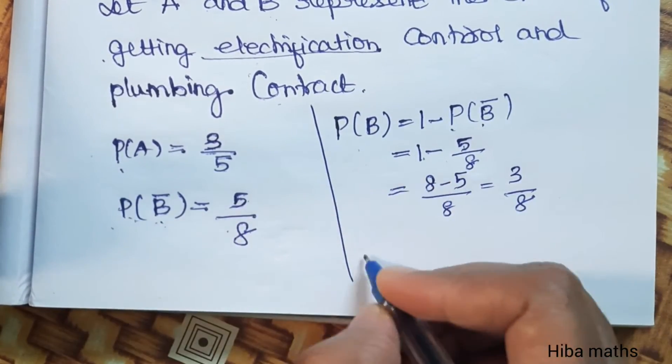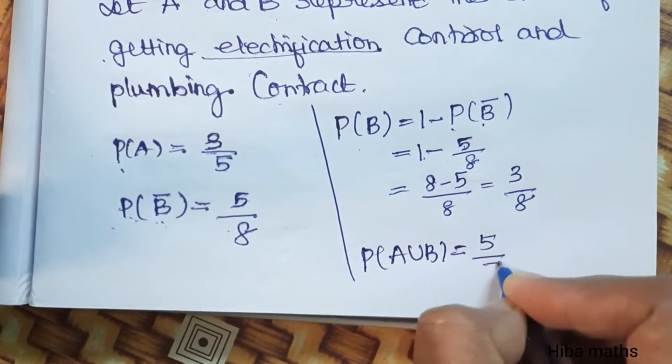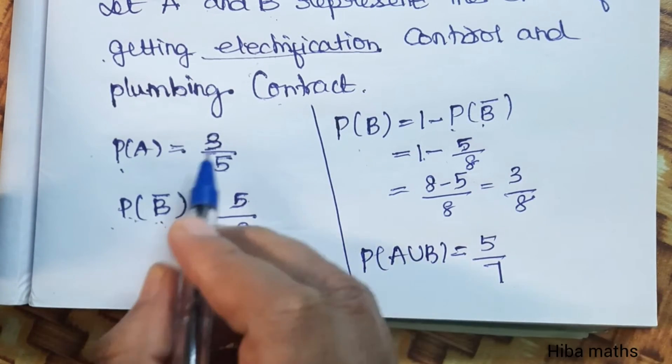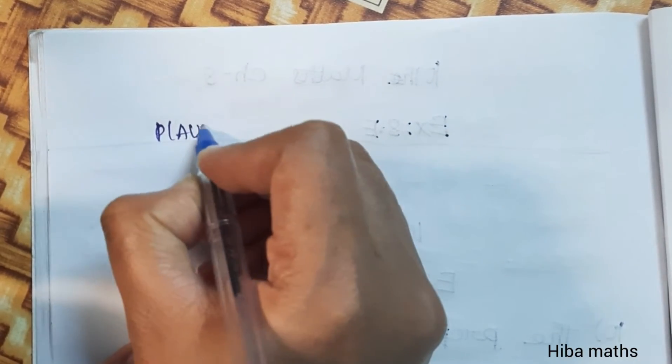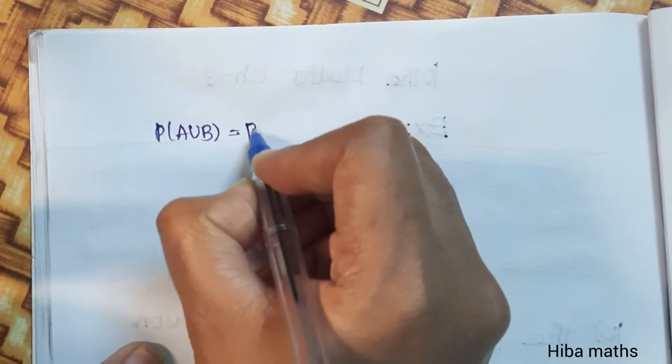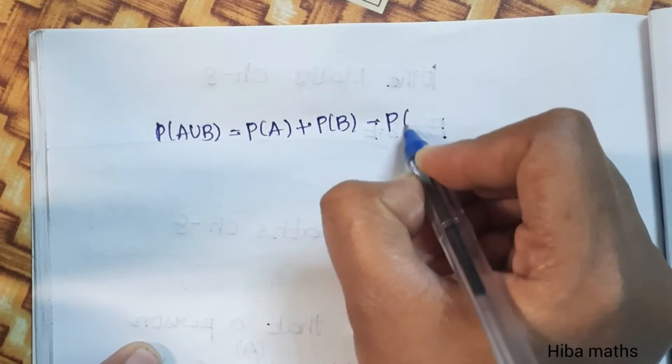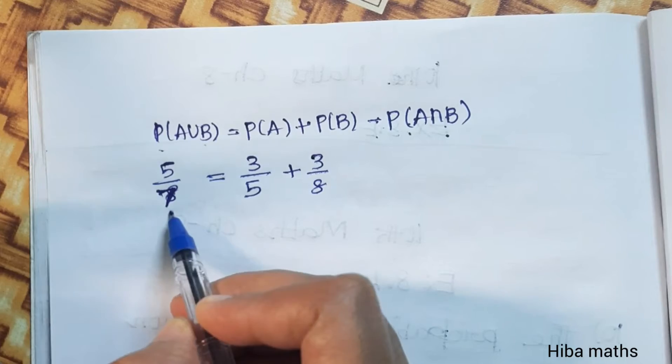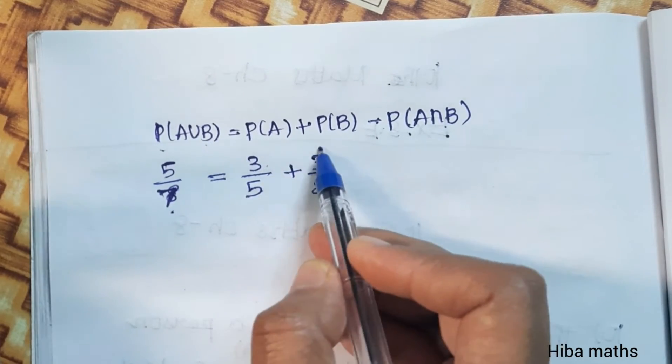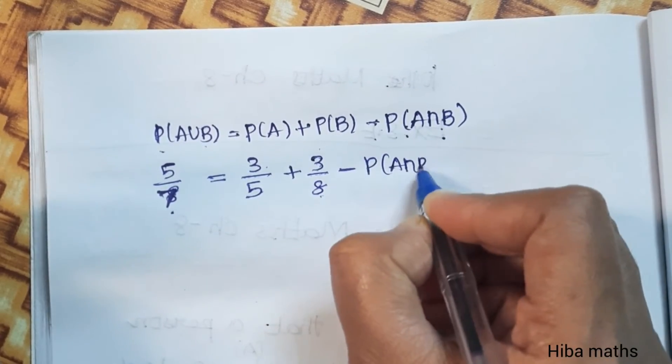So P of A, P of B, P of A union B - that is 5 by 7. To find P of A intersection B, the formula is P of A union B equals P of A plus P of B minus P of A intersection B. P of A union B value 5 by 7, P of A value 3 by 5, P of B value 3 by 8 minus P of A intersection B.